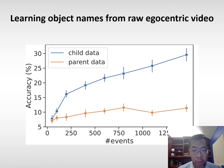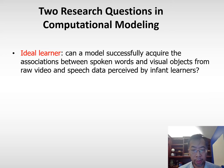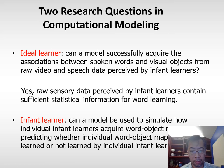Here are the results from this modeling effort. We trained the same model with either the child's data or the parent's data, using the model trained on parent's data as a baseline. The model trained on the child's egocentric data performs significantly better. As the number of naming instances increases, performance improves dramatically from just over 5% to close to 30%. This allows us to answer the ideal learner question: the raw sensory data perceived by the infant learner contains sufficient statistical information for word learning.